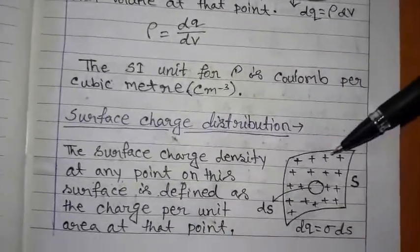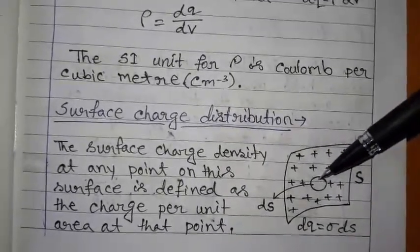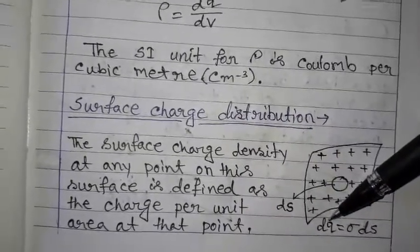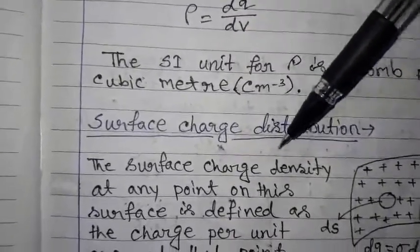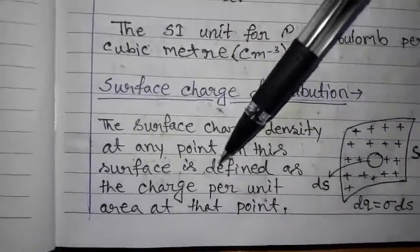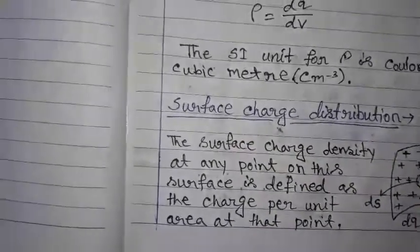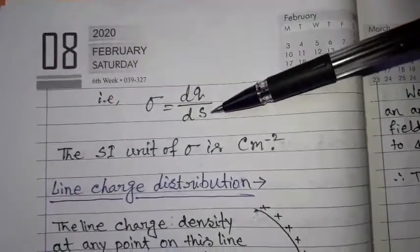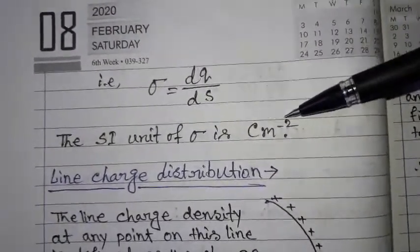Next is surface charge distribution. Here we have a surface S containing some amount of positive charge. We consider an elemental surface area dS containing some amount of charge dq. The surface charge density at any point on this surface is defined as the charge per unit area at that point, that is σ equal to dq by dS. The SI unit of σ is coulomb per meter squared.